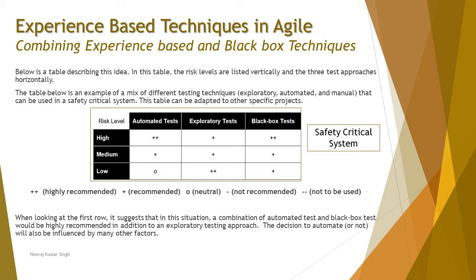Look at the table carefully. We have three risk ratings — high, medium, and low — and three columns: automated test, exploratory test, and black box test. The symbols are explained below: double plus stands for highly recommended, plus stands for recommended, neutral means neither recommended nor discouraged, a hyphen stands for not recommended, and double hyphen stands for not to be used at all. In this safety critical system scenario, for high risk areas, automated test and black box testing are both highly recommended. A combination of automated test and black box test is highly recommended, with a little bit of exploratory testing as an addition.